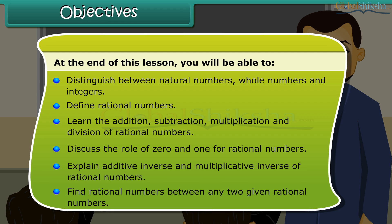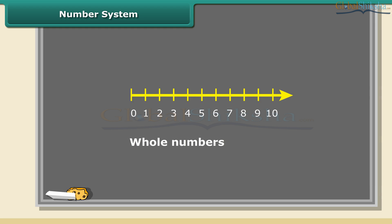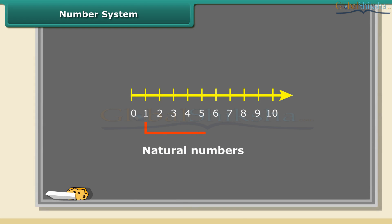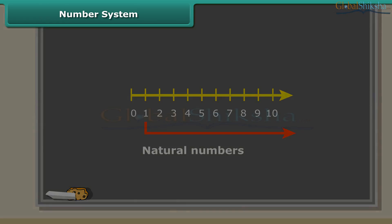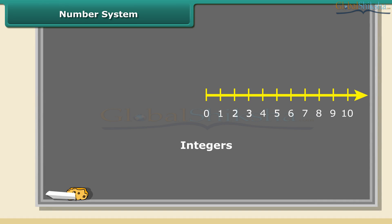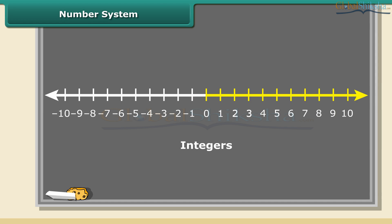Whole numbers are simply the numbers 0, 1, 2, 3, 4, 5, and so on — there are no fractions. Natural numbers are the positive whole numbers except 0. Integers are like whole numbers but they also include negative numbers, so integers can be positive, negative, and 0.